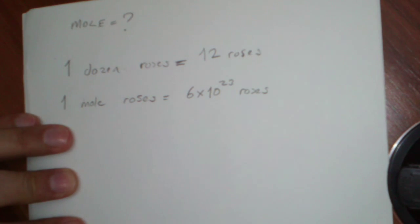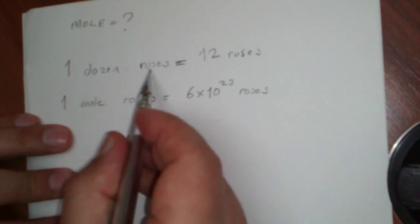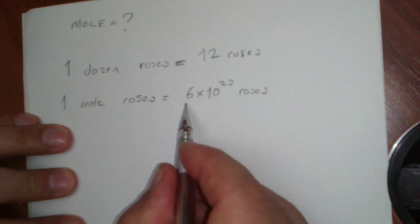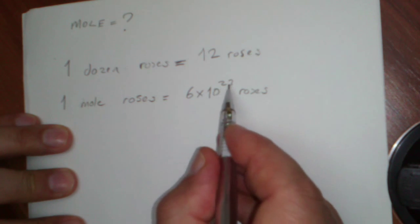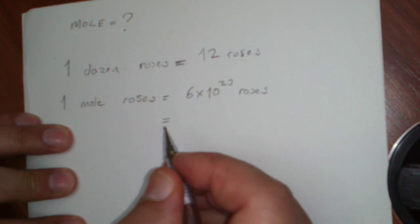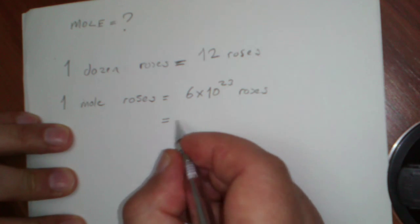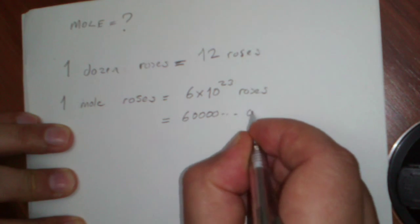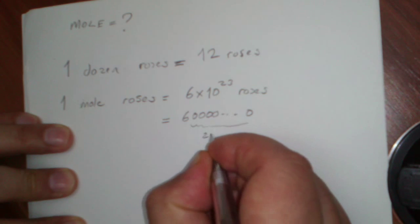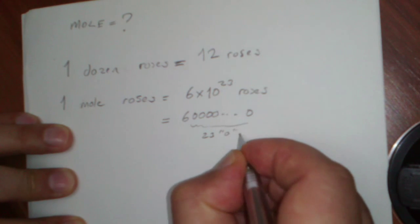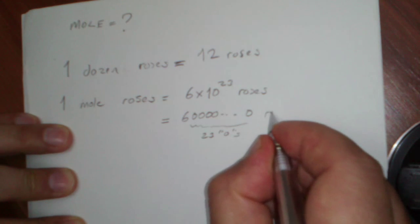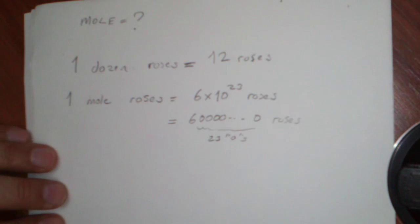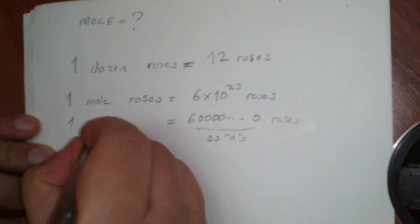This is the equality. You may count roses with dozens; you may count the same roses with moles. Six times ten to the power of twenty-three means, from mathematics, after six we have something like twenty-three zeros. This is a very, very large number — trillions of roses. And this is exactly right.